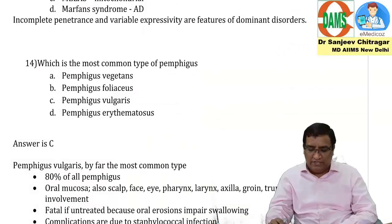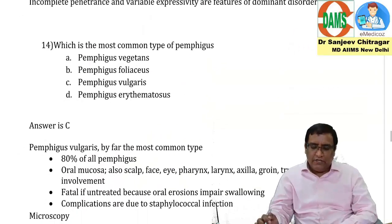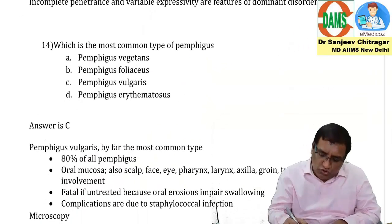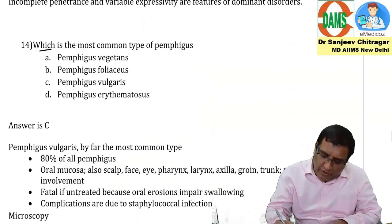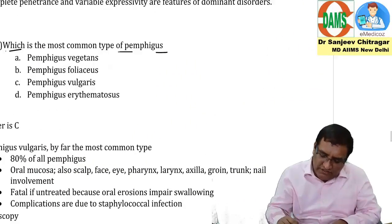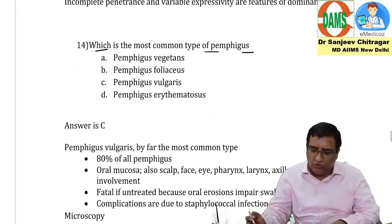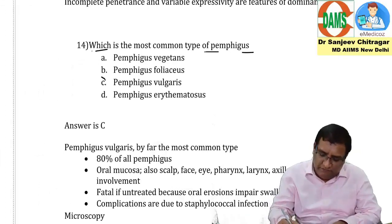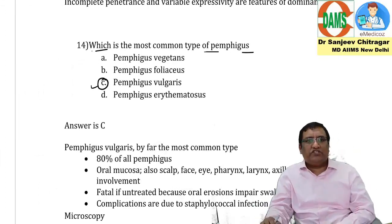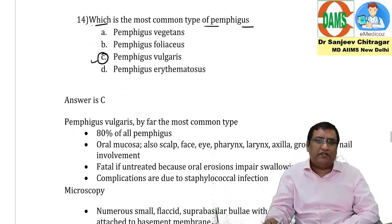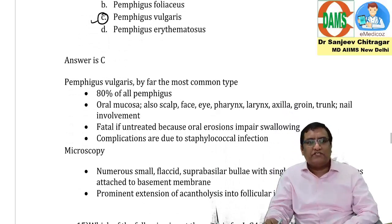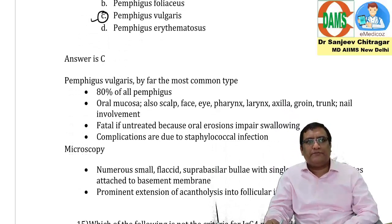It is an autosomal dominant, that's why. Which is the most common type of pemphigus? So what is the answer? Pemphigus vulgaris. We just read that patient appearance etc. Pemphigus vulgaris.